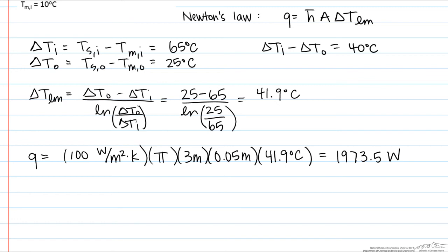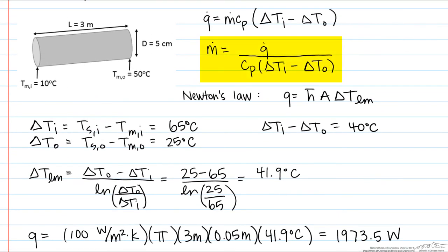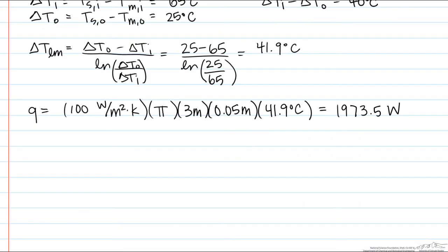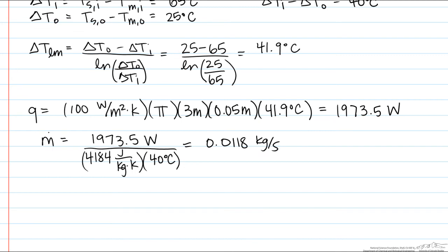And now finally we can put it back into this equation so that we can find our mass flow rate, which is going to equal 0.0118 kilograms per second. And remember if you are wondering about the units a watt is equal to joules per second.